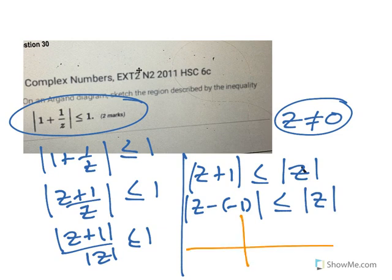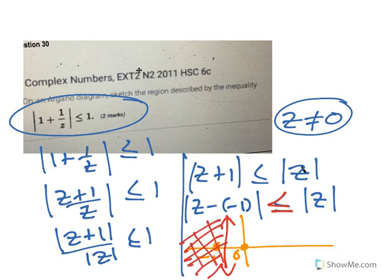So let's just do it as if it was equal to first. So -1 is here and 0 is here. So if z moves, it's equal distance from both of them and it's equal to it, that would be the perpendicular bisector. If it's less than it, it would be on that side.